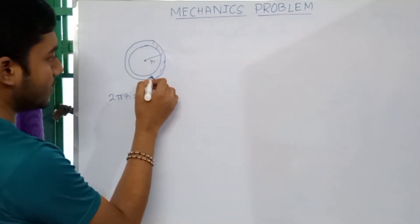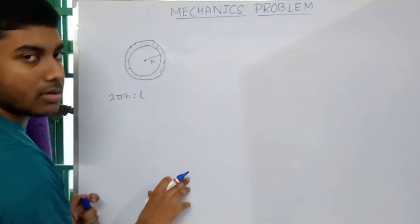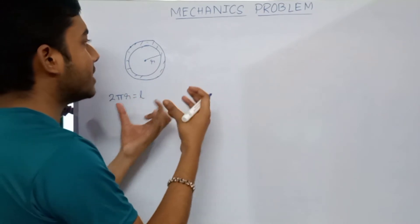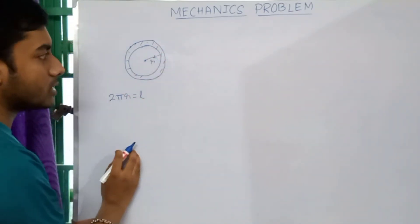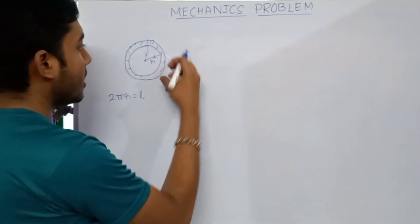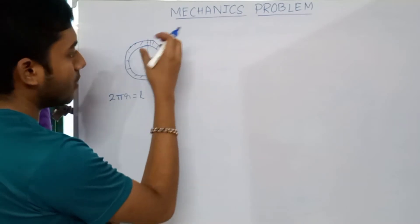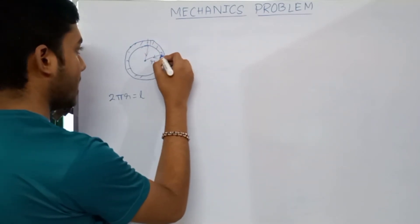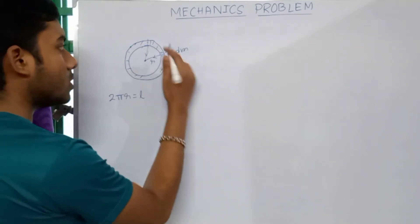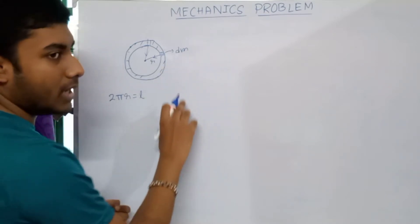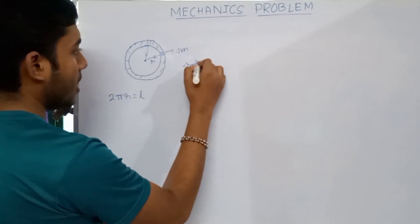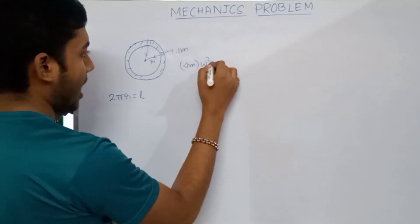As this loop is spinning, an inward force is generated at each and every part of the string. That force is the centripetal force. For a small mass δm, that force is δm·ω²r, directed inward.